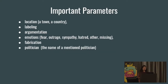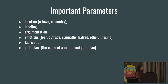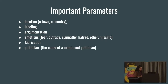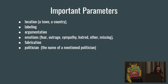Some important parameters when doing this are location, labeling, argumentation, emotions, fabrication, and the politician — since we're talking about propaganda. Certain locations are marred with fake news and you'll find multiple occurrences of issues there. Labeling is when you're labeling an individual or a community. Emotions are when the text is evoking any sort of emotion — like the Yes Bank example, which was invoking panic and fear because of the prior PMC Bank incident.